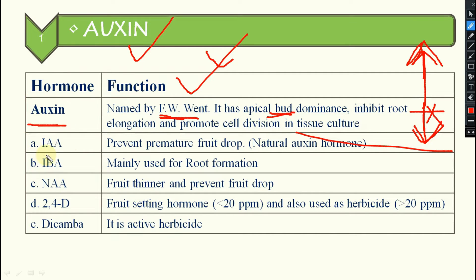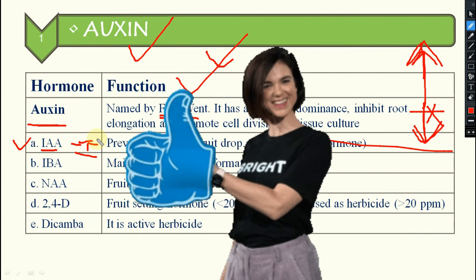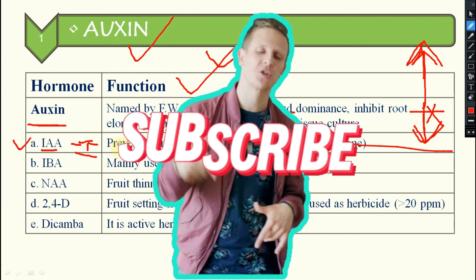There are different natural and synthetic auxins. The first one is IAA — Indole Acetic Acid. The second is IBA, and the third is NAA. Indole Acetic Acid is the most important natural auxin hormone.